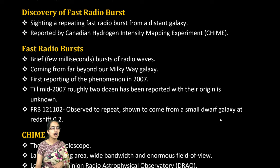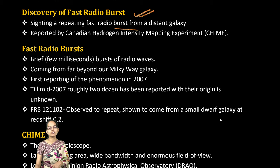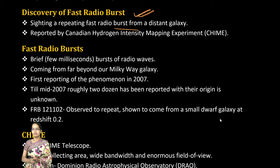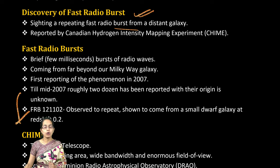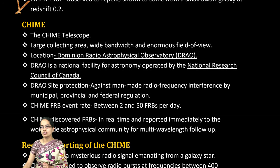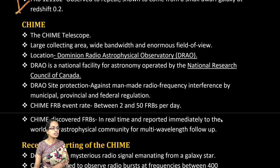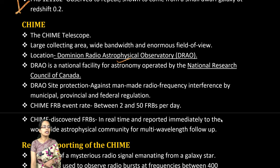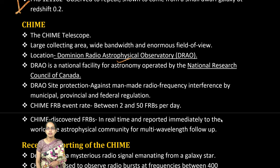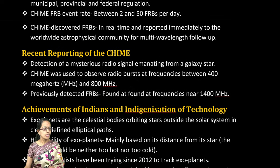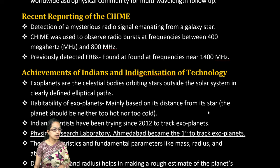The next is the discovery of fast radio bursts. A site of repeating fast radio bursts from a distant galaxy beyond the Milky Way has been observed. The CHIME telescope, located at the Dominion Radio Astrophysical Observatory under the National Research Council of Canada, is important here. Man-made radio frequency interference under municipal and federal regulations was taken into account, and CHIME reports of radio bursts at various frequencies have been significant.